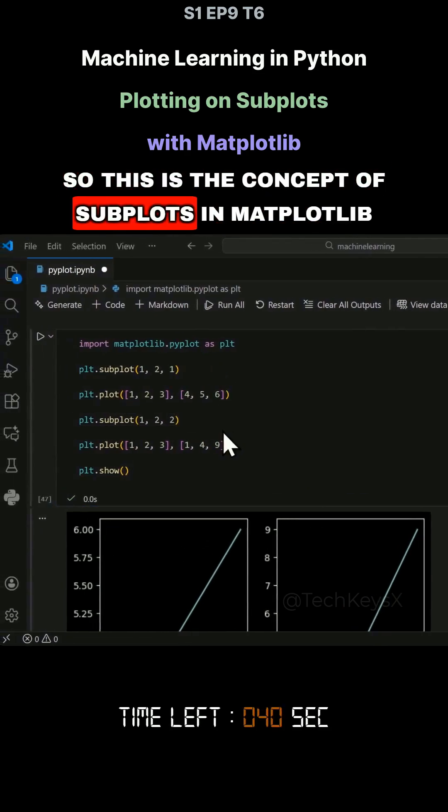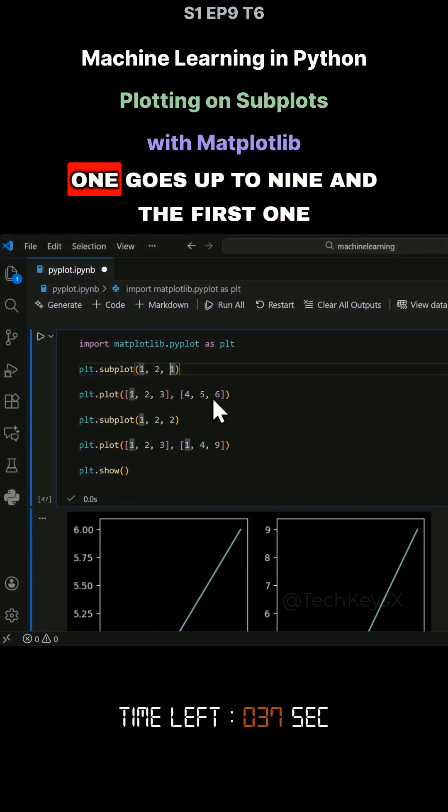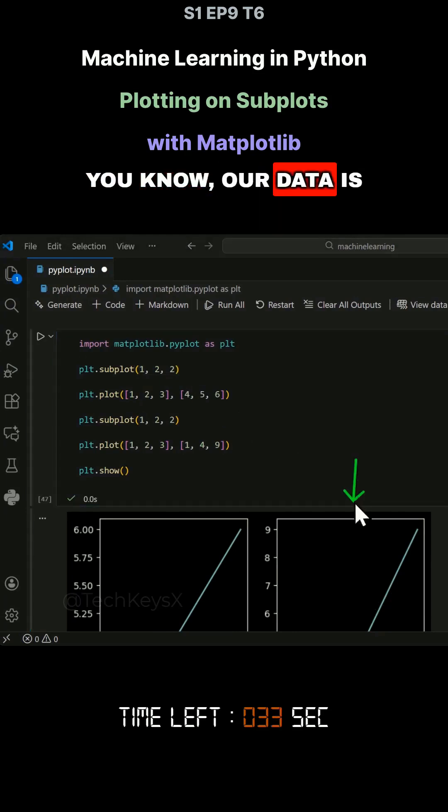So this is the concept of subplots in Matplotlib. And you can easily change this. You can see currently the second one goes up to nine and the first one goes up to six because that's where our data is.